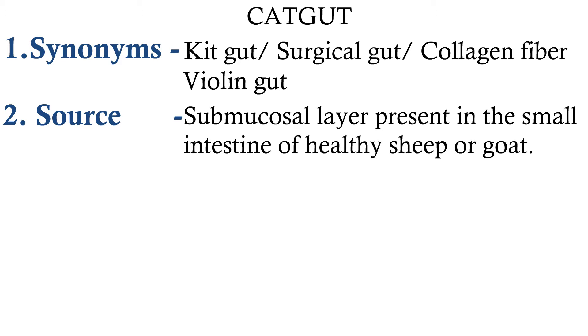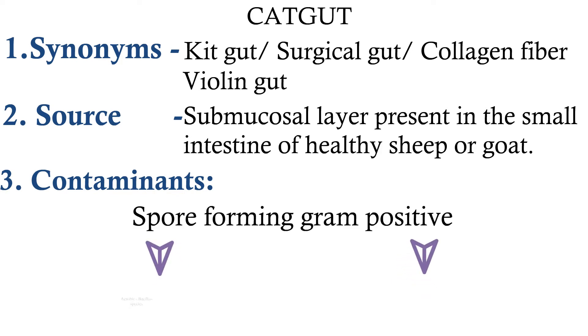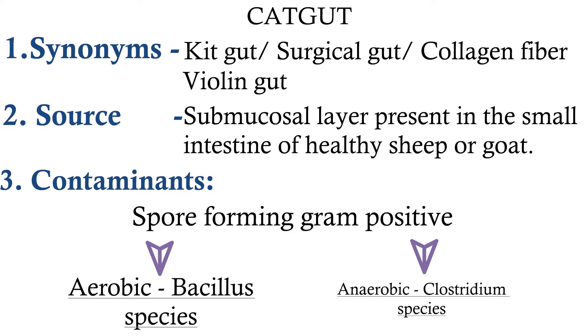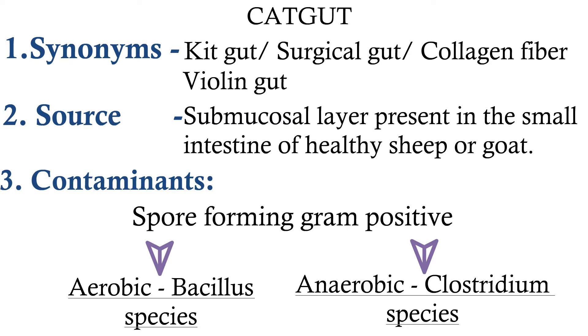The contaminants that may be present in this catgut are of two types: spore-forming gram-positive, aerobic and anaerobic species of bacillus and clostridium respectively.